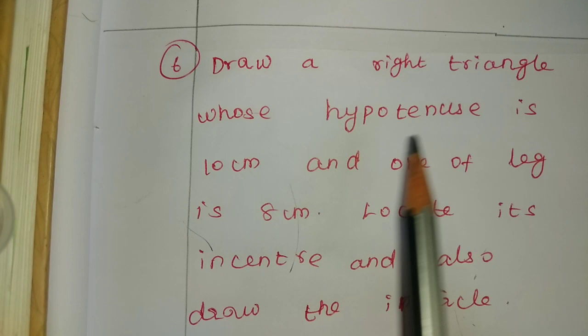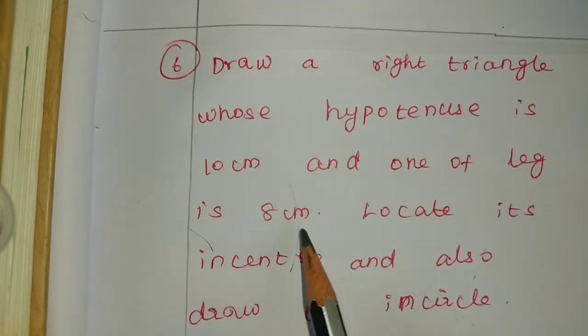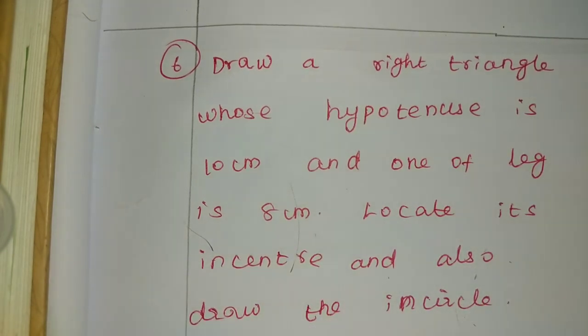Draw a right triangle whose hypotenuse is 10 cm and one of the legs is 8 cm. Locate the incenter and also draw the incircle.